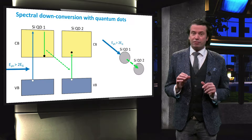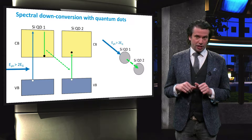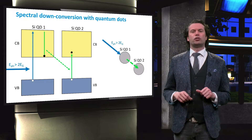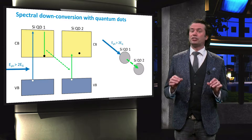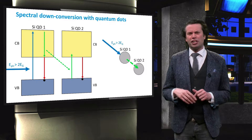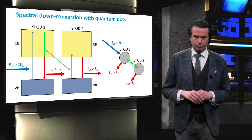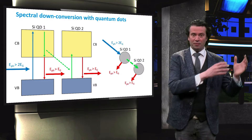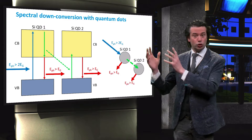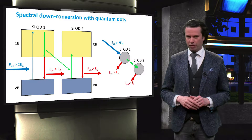If non-radiative recombination mechanisms like Auger recombination and Shockley-Reed-Hall recombination are sufficiently suppressed, the electron-hole pairs in both quantum dots can radiatively recombine such that each of the two dots emits one reddish photon. As such, one incident bluish photon is converted into two reddish photons, which can be absorbed by a PV material.